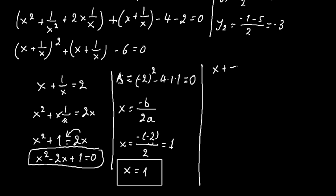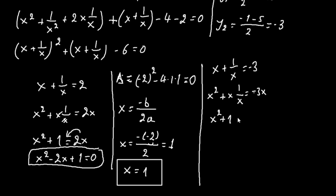Now for our second solution, y₂ equals minus 3, so we have x plus 1 over x equals minus 3. Multiplying both sides by x gives x squared plus 1 equals minus 3x. Bringing minus 3x to the other side gives x squared plus 3x plus 1 equals 0.